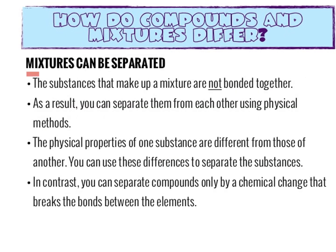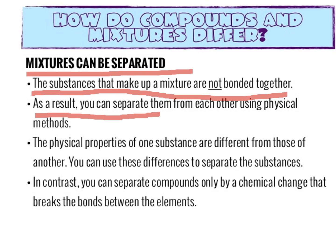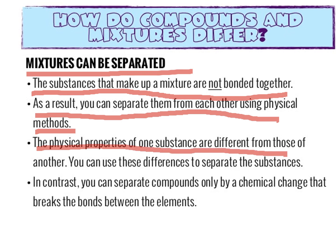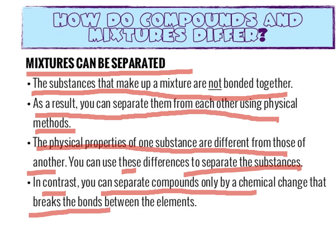Next, mixtures can be separated. The substances that make up a mixture are not bonded together. As a result, you can separate them using physical change. The physical properties of one substance differ from those of another, and you can use these differences to separate substances. In contrast, compounds can only be separated by chemical change that breaks the bond between elements. For example, with salt and water, you just heat the mixture and the solvent evaporates, leaving the salt behind — that is one way to separate a mixture.